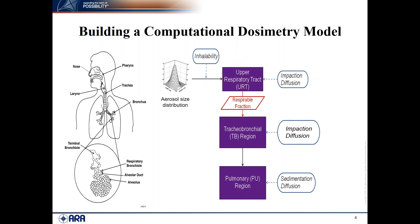That respirable fraction enters the lower respiratory tract — first the tracheobronchial (TB) region, where you have high flow at the start that slows down. You get impaction in the upper airways of the TB region, and diffusion for smaller particles in the deeper airways. After the TB region comes the pulmonary region, where air flow is very low. There is no more impaction; deposition occurs mainly by sedimentation for large particles and diffusion.